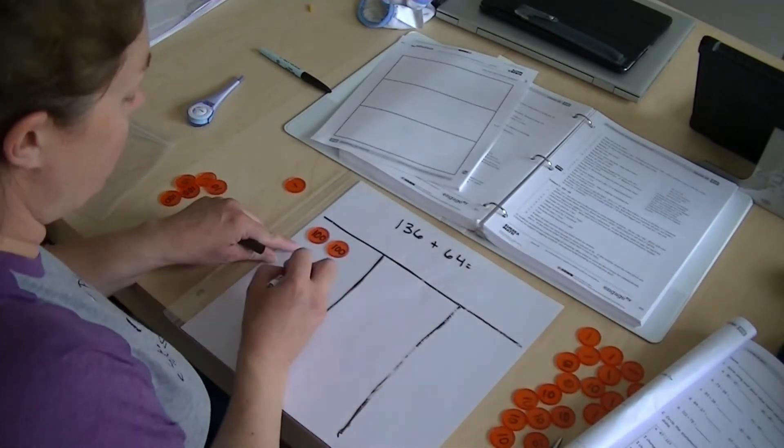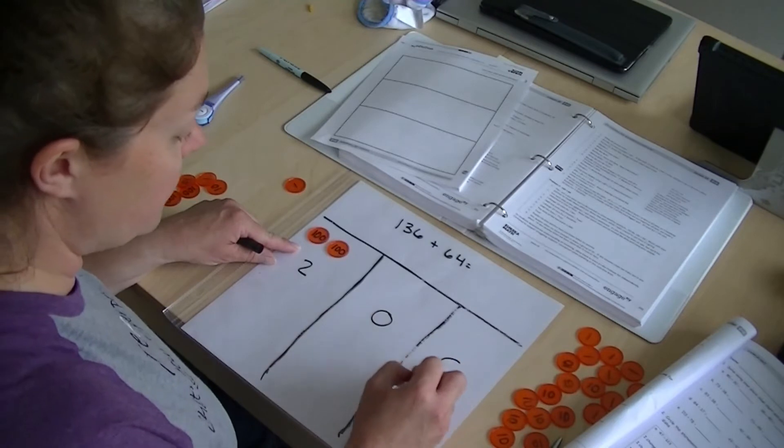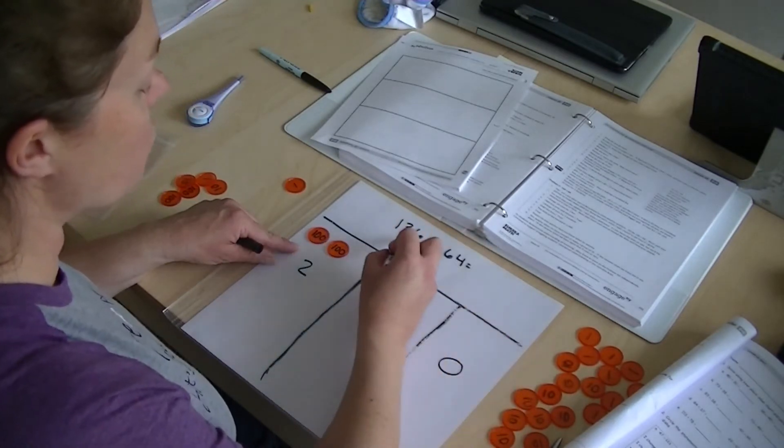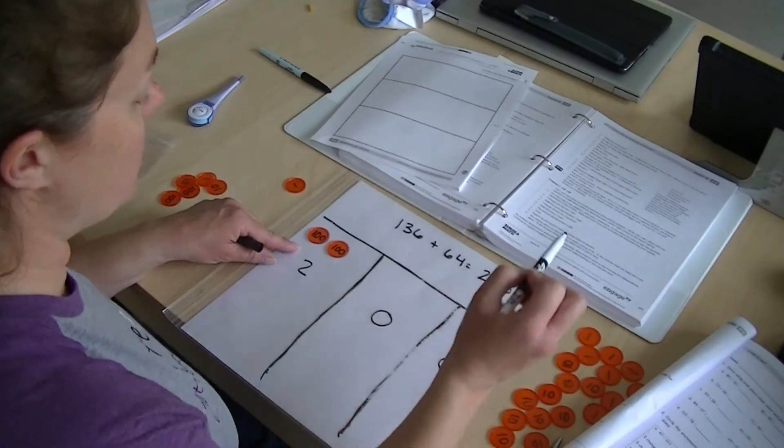So my answer, I have two hundreds, zero tens, and zero ones. So 136 plus 64 equals two hundred.